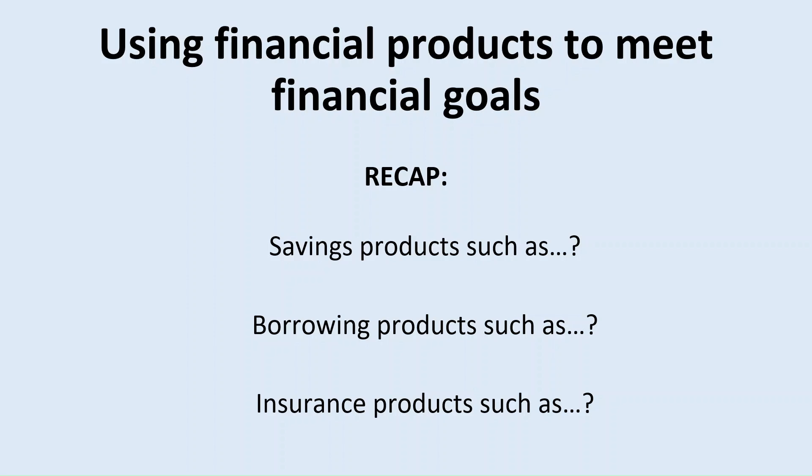What financial products can we use in order to meet our financial goals? Just to recap: savings products we may wish to use include fixed-term savings accounts and premium bonds. Borrowing products include a mortgage, a PCP, or hire purchase. When it comes to insurance products, there are a number of different insurance types we may wish to take out, including life insurance.